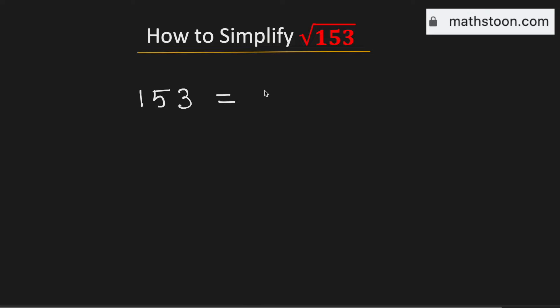We know that 153 can be written as 9 times 17. Among 9 and 17, 9 is a perfect square, which is a square of 3.